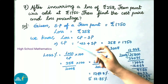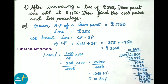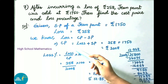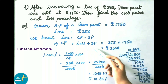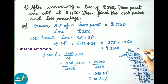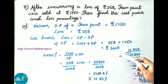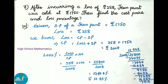We know loss formula: loss equals cost price minus selling price. We need to find cost price, so cost price equals loss plus selling price. That equals 258 plus 1750 rupees, which gives 2008 rupees. Therefore cost price of jean pant is 2008 rupees.